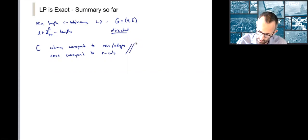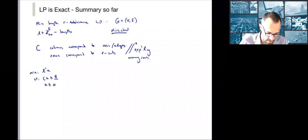Just a brief note, this has exponentially many rows. Our LP is minimize L transpose X subject to CX greater than or equal to 1 and X non-negative.